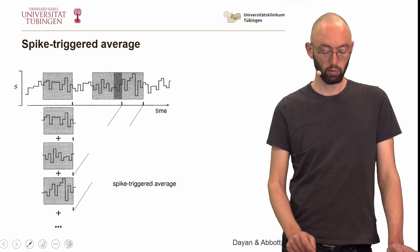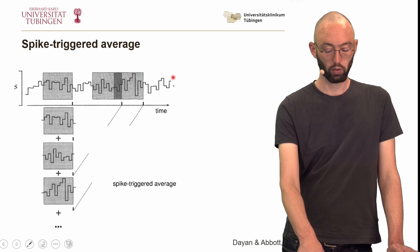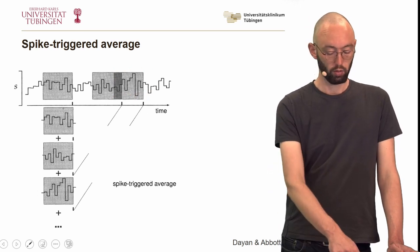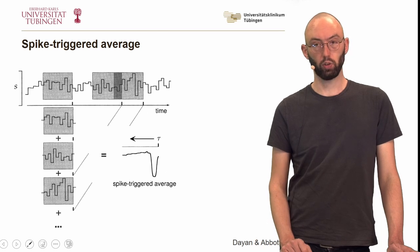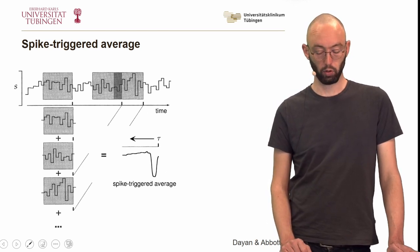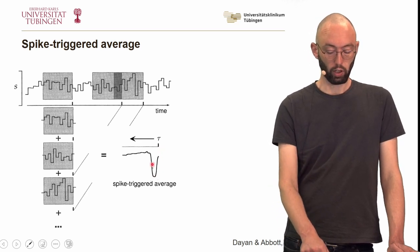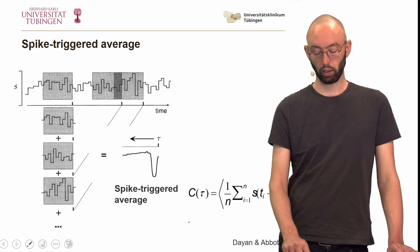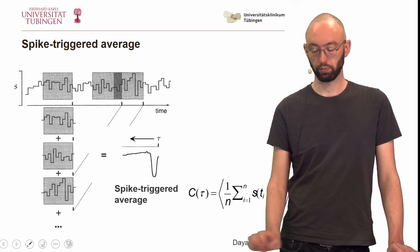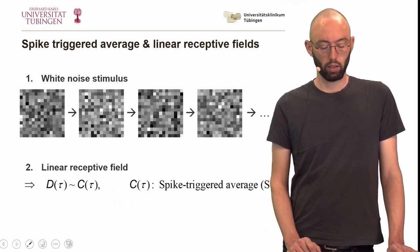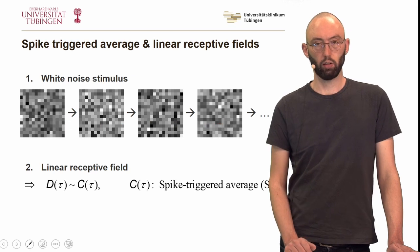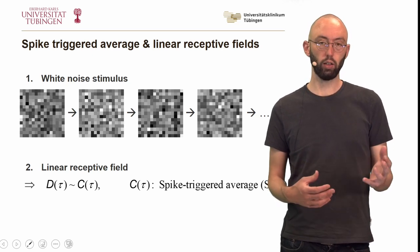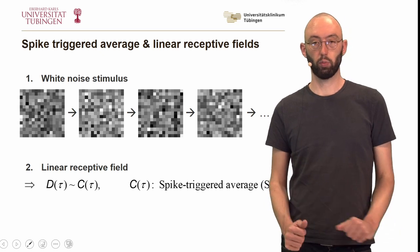We can illustrate this again: in a one-dimensional stimulus, we have spikes at certain time points, cut out the stimulus before them, put them underneath one another, and compute the spike-triggered average by summing and dividing by the number of spikes. This would correspond to a neuron that strongly reacts to a dip in the stimulus. Formally, for a white noise stimulus where there are no spatial or temporal correlations, the linear receptive field as defined by the series expansion is actually the spike-triggered average. For white noise stimulus and an LNP neuron, this is also true.